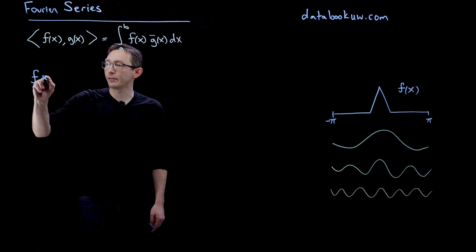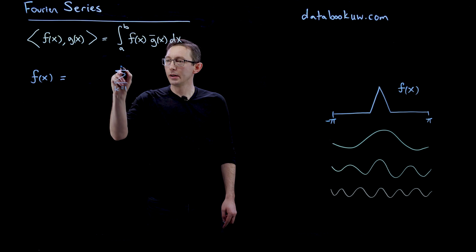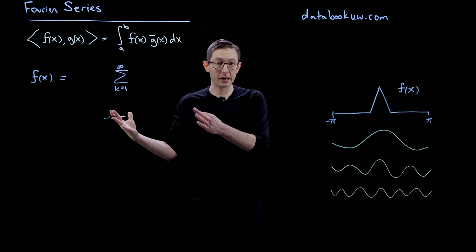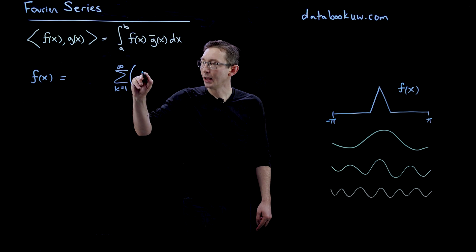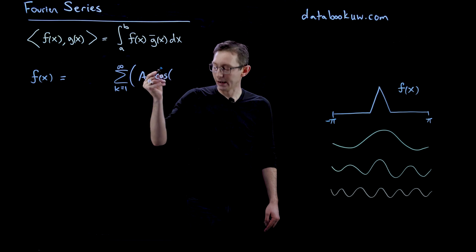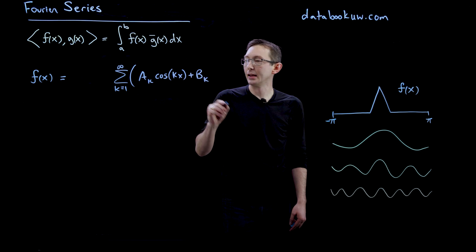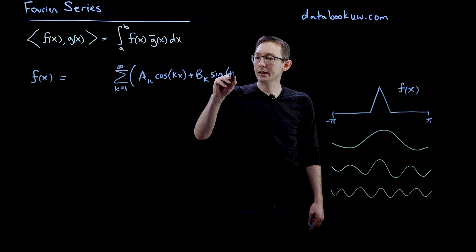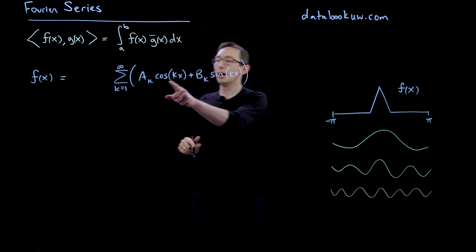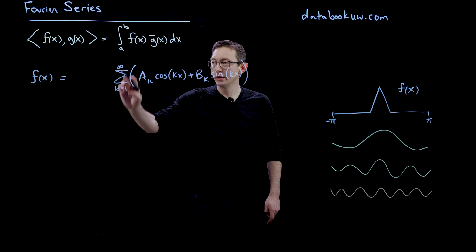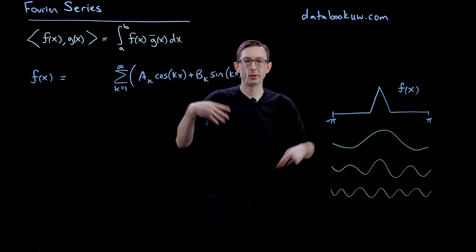We can represent our function f of x as a sum from k equals 1 to infinity of cosines and sines of increasingly high frequency. I'm going to write this as some a sub k times cosine of kx plus b sub k times sine of kx, where a and b are coefficients — these are called my Fourier coefficients. This index runs from k equals 1 to infinity, giving sines and cosines of period 1, period 2, period 3, and so on.